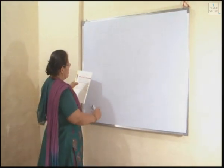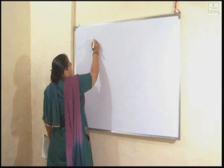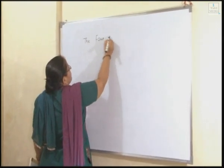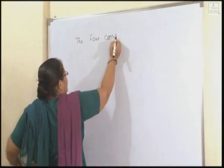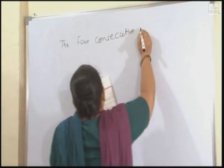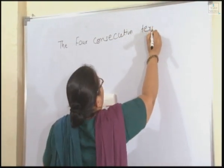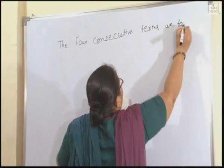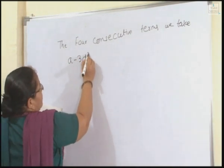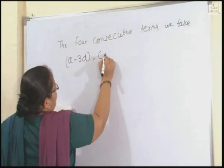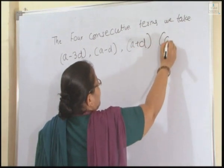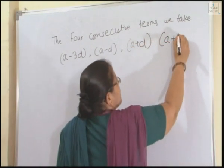This is given here. The four consecutive terms we'll take as: A minus 3D is the first term, second term we take A minus D, A plus D, and the fourth term we take A plus 3D.